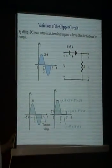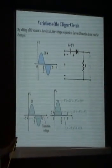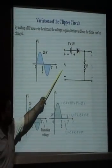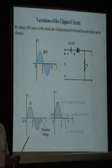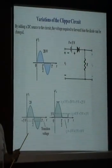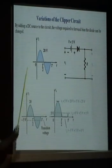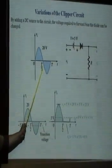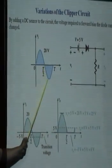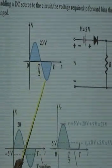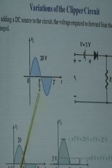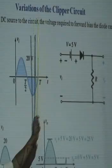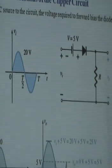Now we are moving to the next slide, which shows a variation in the clipper circuit. Whatever is applied at the input terminal is Vi. Here the input signal is a square wave: 20V from 0 to half cycle, and negative 20V from half cycle to full cycle. An internal battery is attached in the circuit with a voltage V equal to 5V.